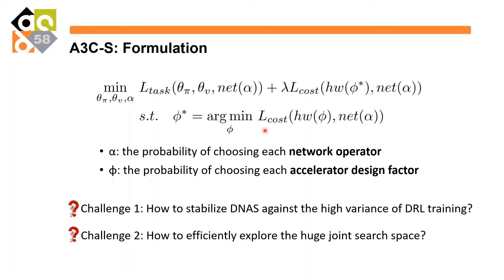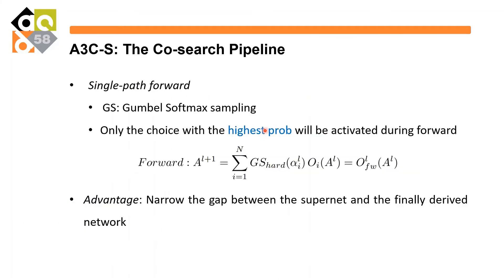The second challenge is how to effectively explore the huge search space. First, we adopt the single-path forward strategy: only one operator in the supernet is activated during the forward pass. This notably reduces search cost compared to activating all possible operators, and also narrows the gap between the supernet and the finally derived network, reducing coupling between operators to better measure their independent performance. We adopt Gumbel Softmax on alpha to get a probability distribution where only the choice with the highest probability is activated during the forward pass — in other words, Gumbel Softmax generates a one-shot mask applied on top of the operator set to activate only one choice.